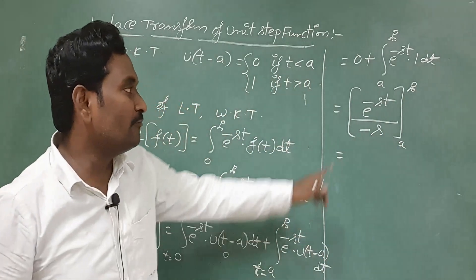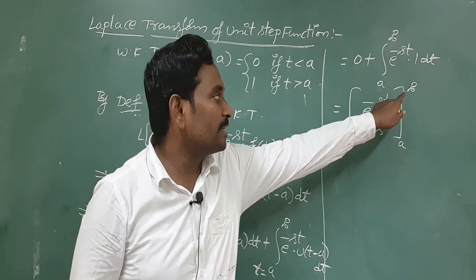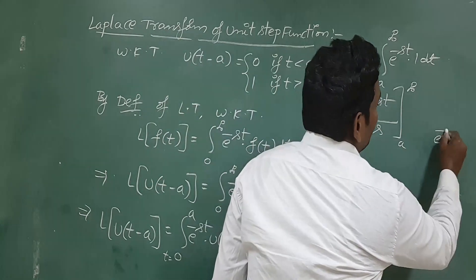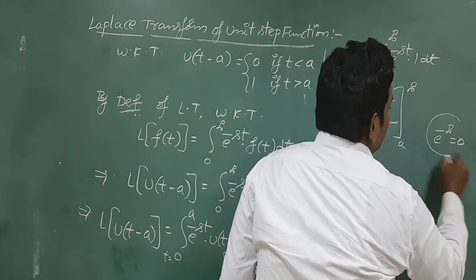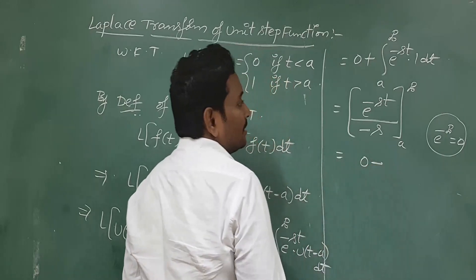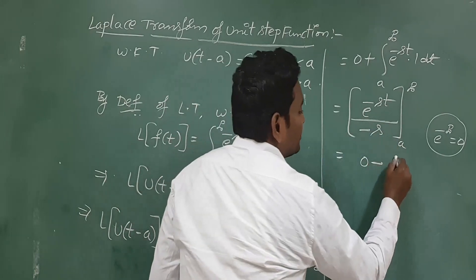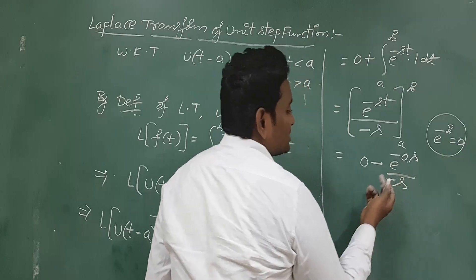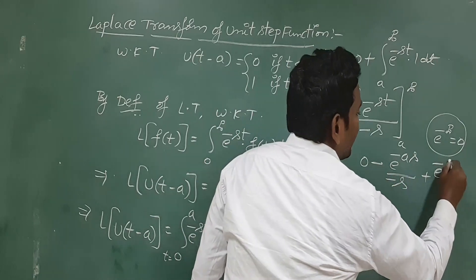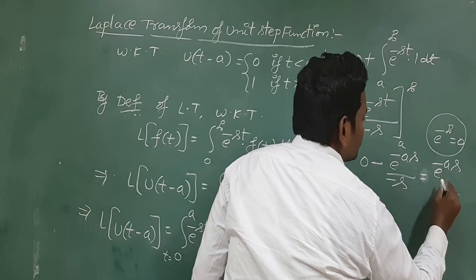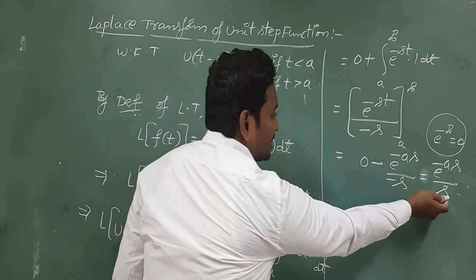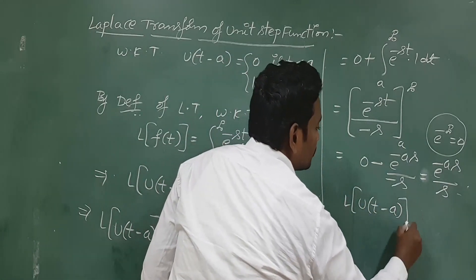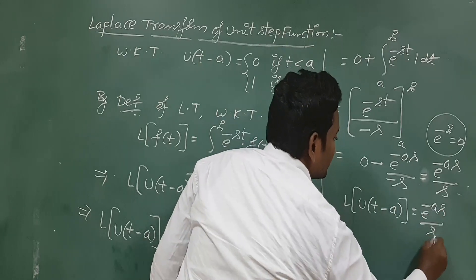Applying the upper limit: e^(-∞) equals 0. Applying the lower limit t = a: we get e^(-as) / (-s). So with the minus of minus becoming a plus, we get e^(-as) / s. Therefore, L{u(t - a)} = e^(-as) / s. This is the Laplace transformation of the unit step function.